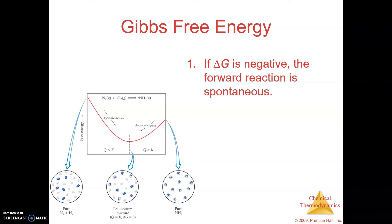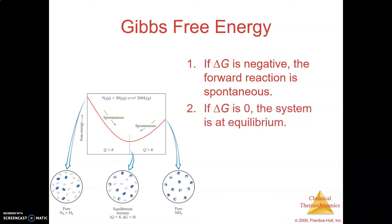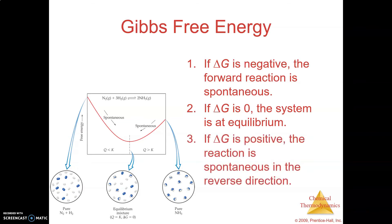The key here is looking at delta G being negative — that means spontaneous. Delta G is zero means the system is at equilibrium. We'll cover that in a later unit when we talk more specifically about equilibrium. Just understand right now, if delta G is exactly zero, then the forward and the reverse process are both occurring at the same time without any outside intervention. And if delta G is positive, the reaction is spontaneous in the reverse direction.